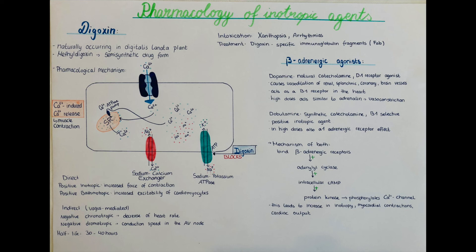Dobutamine is the second most widely prescribed inotropic agent after digoxin. It is a synthetic catecholamine, B1 selective, and a positive inotropic agent. In higher doses it will also affect alpha-1 adrenergic receptors, which may increase oxygen demand of the heart and subsequently lead to angina and chest pain. Both dopamine and dobutamine work by binding to beta-adrenergic receptors and activating adenylyl cyclase, increasing intracellular cyclic AMP, which activates protein kinase that phosphorylates calcium channels so more calcium reaches the myocardial muscle cells — increasing inotropy, contraction, and cardiac output.